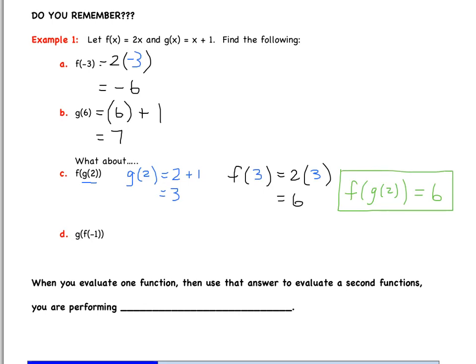So now part D is very similar. The only difference is now we want g(f(-1)). So again, we work inside out. So the first thing I want to find is what f(-1) is. So f(-1) is 2 times -1, or simply -2. So this is really asking for us to find g(-2). So now we simply substitute -2 into function g and evaluate. So -2 + 1, and we get -1. So our final answer, g(f(-1)) is equal to -1.